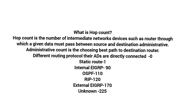Hop count is the number of intermediate network devices, such as routers, through which given data must pass between source and destination. Administrative distance is used for choosing the best path to a destination router. Different routing protocols have different ADs: directly connected is 0, static route is 1, internal EIGRP is 90, OSPF is 110, RIP is 120, external EIGRP is 170, and unknown is 255.